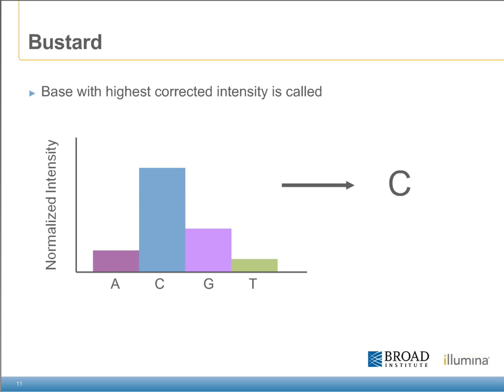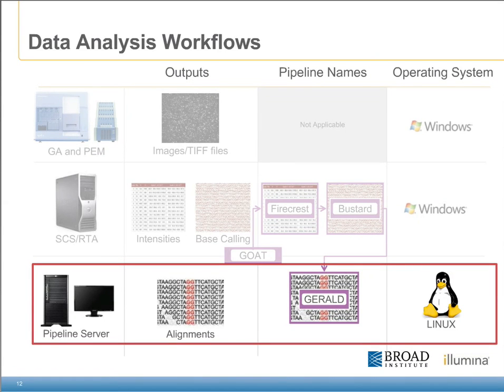Lastly, Bustard attempts to call the correct base given the intensities from each of the bases contributing. It chooses the highest signal of the four bases, as you can see from the example below. In this case, although there were four intensities provided, one from each base, the C base had clearly the highest intensity even after all of the normalization tools have been applied. Now that we've had a chance to discuss the modules that make up the primary analysis, including FireCrest and Bustard, let's focus on the remaining portion of the data analysis workflow.